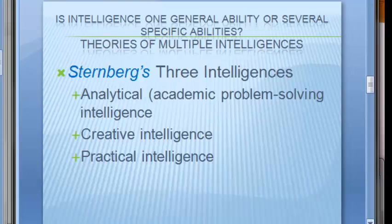Sternberg came up with the triarchic theory of intelligences. He says there are multiple intelligences, but instead of Gardner's eight, he identifies three: analytical, creative, and practical. Analytical is the academic problem-solving type — you're given a problem with one right answer and you figure it out. These tests tend to predict school grades and some real-world success.